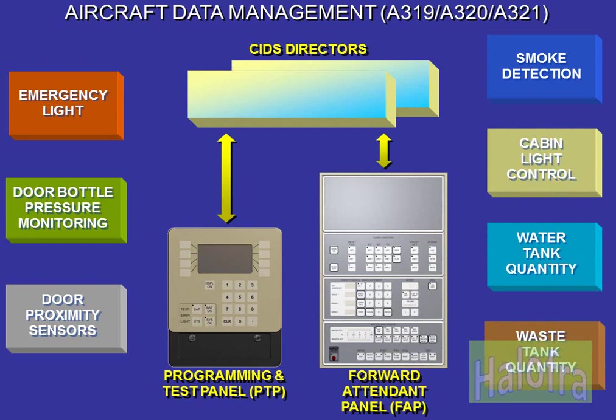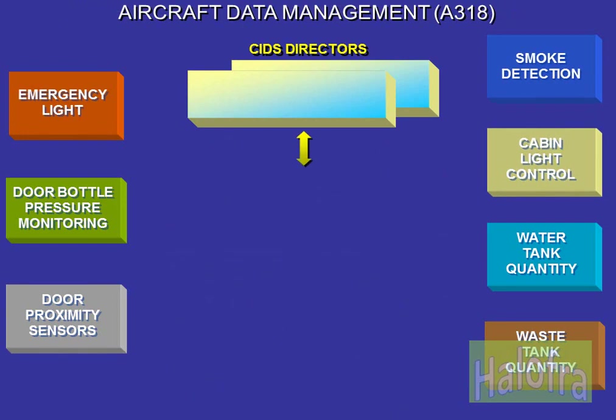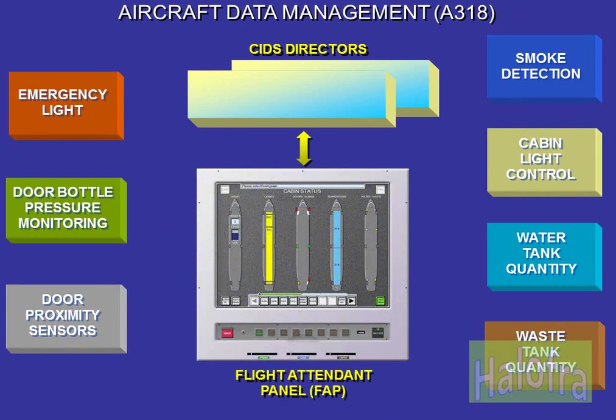It is possible to control and monitor aircraft systems from the PTP and from the FAP. On the A318, the flight attendant panel displays the current cabin status on the cabin status page. The CIDS and related cabin systems are controlled and monitored from the flight attendant panel by its associated page.